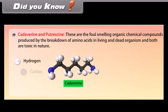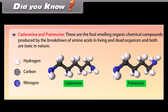Did you know? Cadaverine and putrescine are foul-smelling organic chemical compounds produced by the breakdown of amino acids in living and dead organisms, and both are toxic in nature.